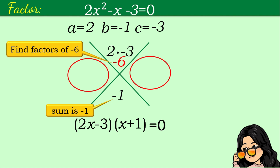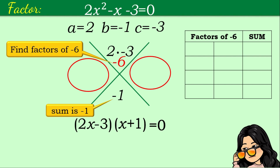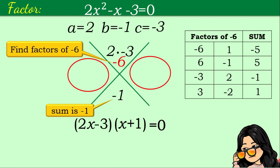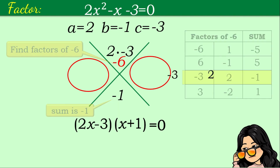The factors of negative 6 are: negative 6 and 1 (sum: negative 5), 6 and negative 1 (sum: positive 5), negative 3 and 2 (sum: negative 1), and 3 and negative 2 (sum: positive 1). We are looking for factors whose sum is negative 1, so negative 3 and 2 are the correct factors. We copy those factors and place them in the diagram.